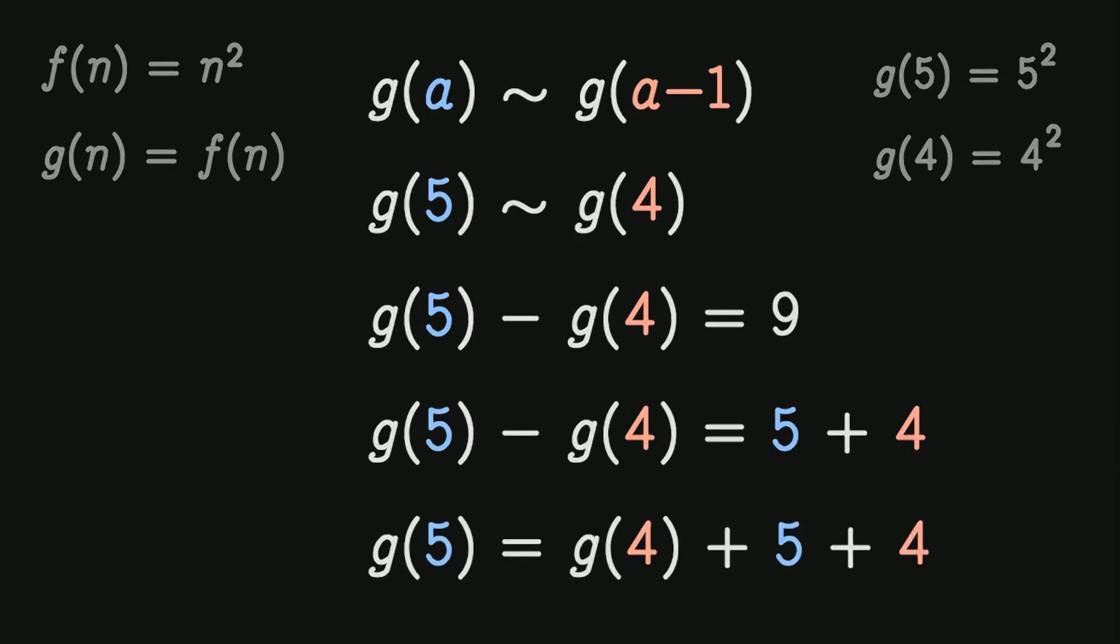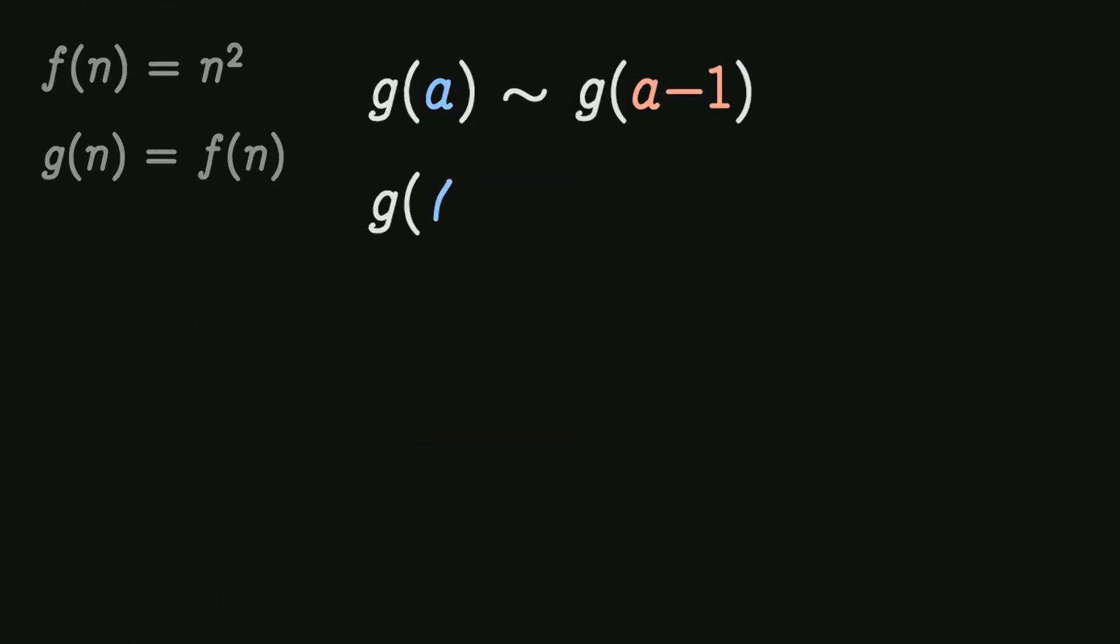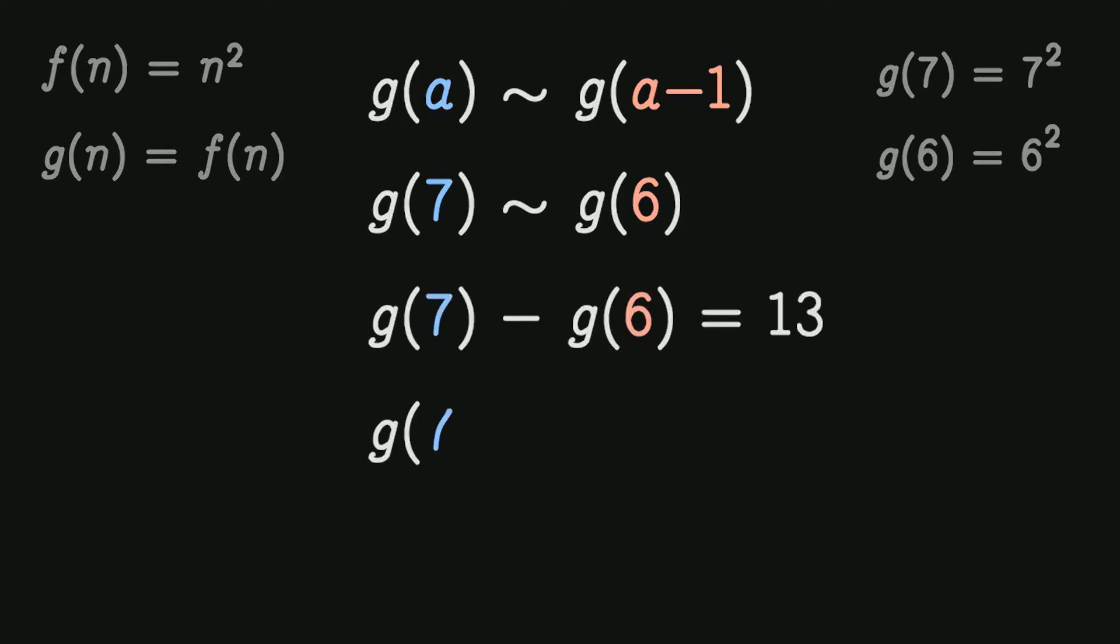Let's try another value. Find the relation between g of 7 and g of 6. If g of 7 is 49 and g of 6 is 36, g of 7 minus g of 6 is equal to 13. Therefore g of 7 is equal to g of 6 plus 7 plus 6.